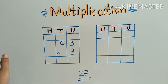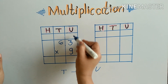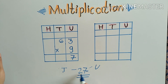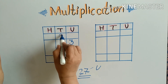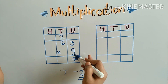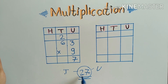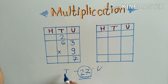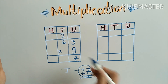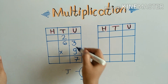The answer is 27. In 27, 7 is the units digit and 2 is the tens digit. So in the units box we will put 7, and the 2 is tens so 2 will go to the tens box as carry over. Now we will multiply 9 by 6.